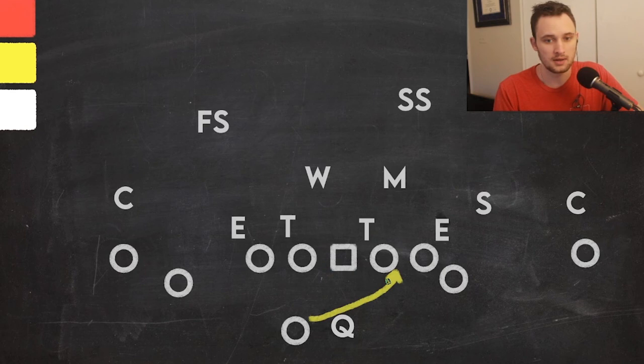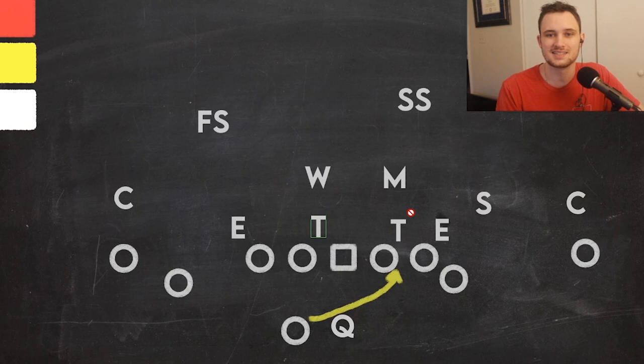But teams can adjust based on the pre-snap alignment of the running back. If they see the running back on the left, teams will shift pre-snap to take away that look. In that case, what do you do?